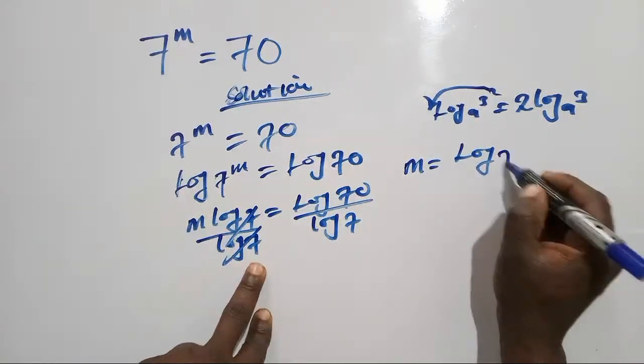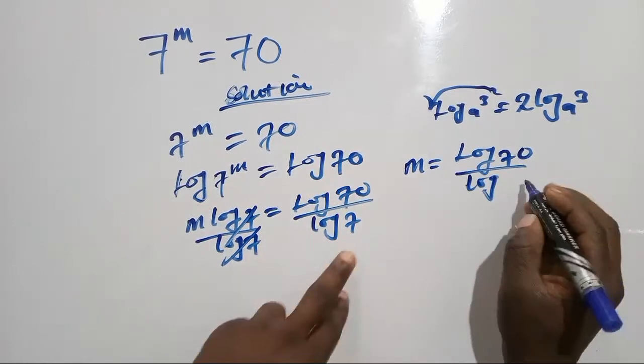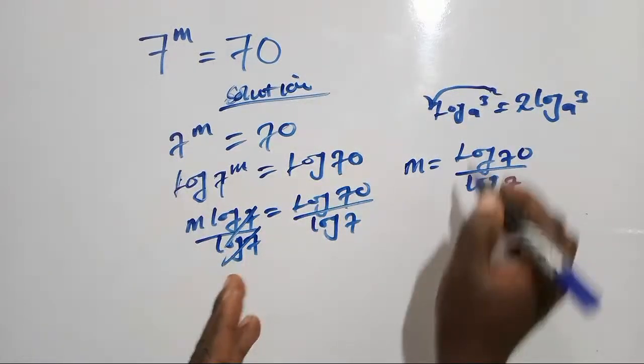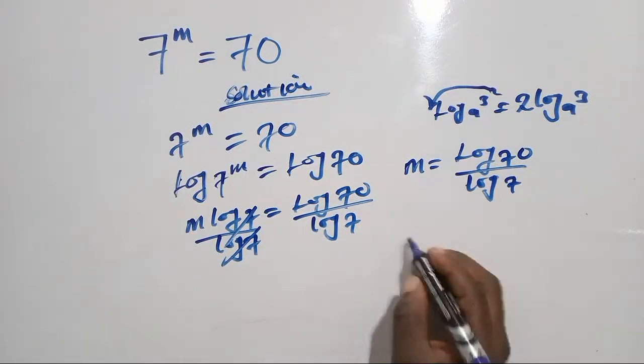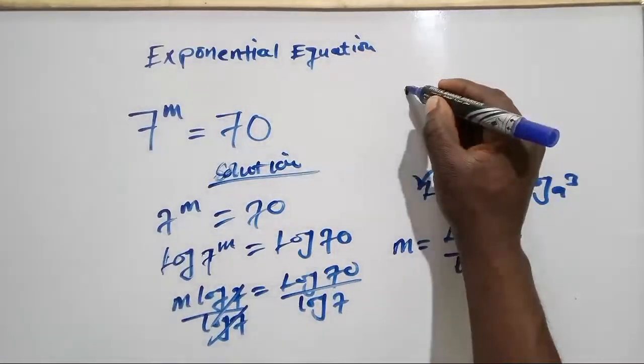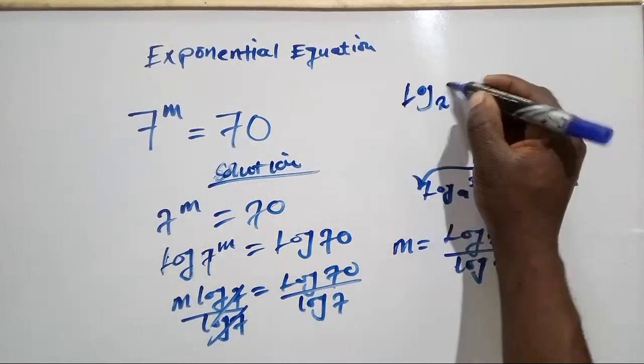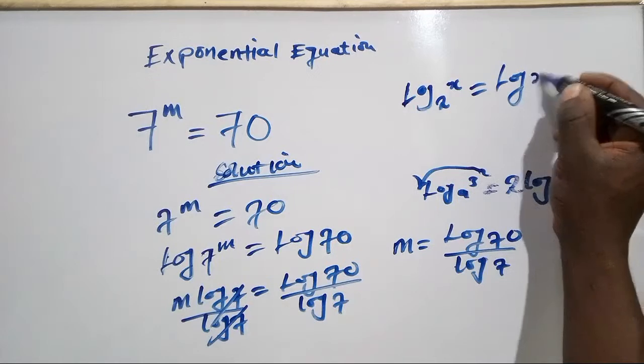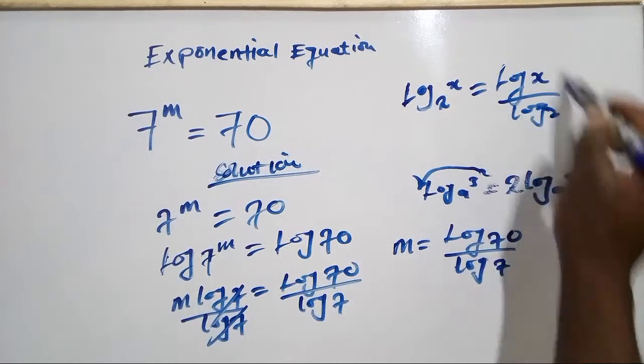And remember, when you are changing the logarithm with a different base, if you have log base 2 of x, this one should be equals to log x over log 2. So we are going to do the same thing, taking this term back to that form, in which it will be m equals log base 7 of 70.